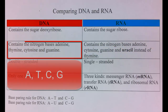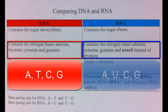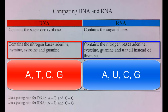The bases are slightly different. DNA contains adenine, thymine, cytosine, and guanine, while RNA contains uracil instead of thymine, with adenine, cytosine, and guanine being the same.